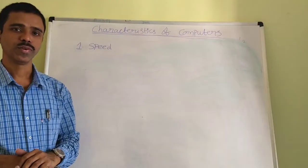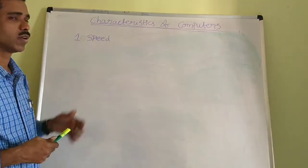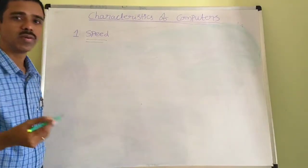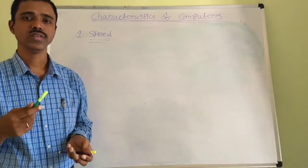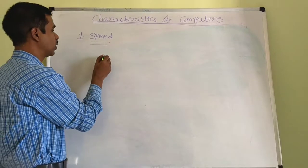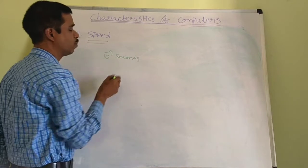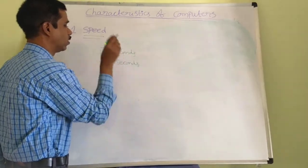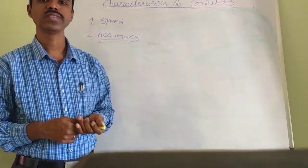The first characteristic of the computer is speed. The speed of the computer is very high — the computer can process millions of instructions in a fraction of seconds. Generally the speed of the computer is measured in nanoseconds, that is 10 to the power minus 9 seconds, or picoseconds, that is 10 to the power minus 12 seconds.